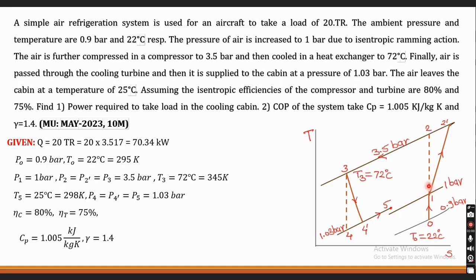From point 1, air enters the main compressor where actual compression takes place. Process 1 to 2 would be isentropic compression, but the compressor is not working at 100% efficiency — its efficiency is 80%. So the temperature rises to point 2 dash. Then it enters the heat exchanger where cooling takes place, and at the exit of the heat exchanger we get a temperature of 72°C. Then it enters the cooling turbine where actual expansion takes place up to point 4 dash. That air is then passed to the cooling cabin where we maintain a temperature of 25°C.